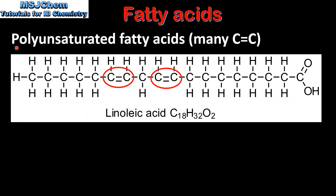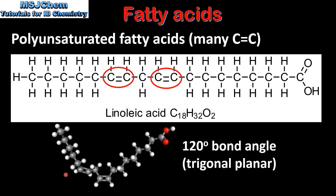As you can see from the 3D model, the carbon to carbon double bond produces a kink in the chain. Next we have polyunsaturated fatty acids, which have many carbon to carbon double bonds. This example is linoleic acid, which has 18 carbon atoms and 2 carbon to carbon double bonds. The carbon to carbon double bonds have a 120 degree bond angle with a trigonal planar arrangement, and as you can see from the 3D model the double bonds produce kinks in the chain.